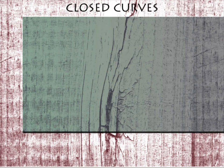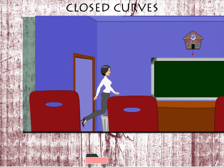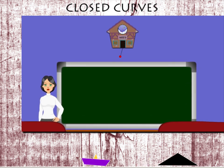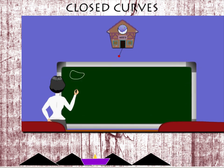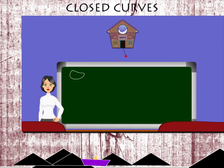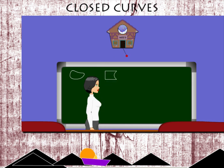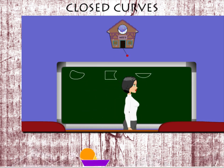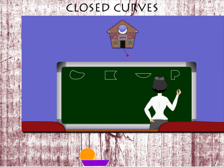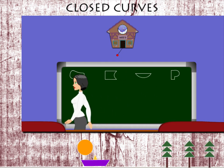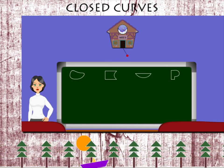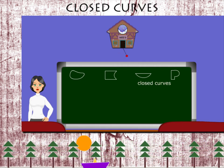Teacher Lucy is on the board drawing shapes. All the shapes 1, 2, 3, and 4 at the top have a curved side and are called closed curves.